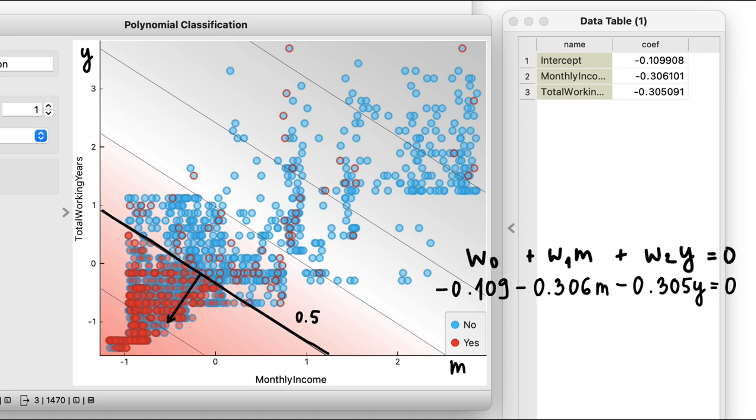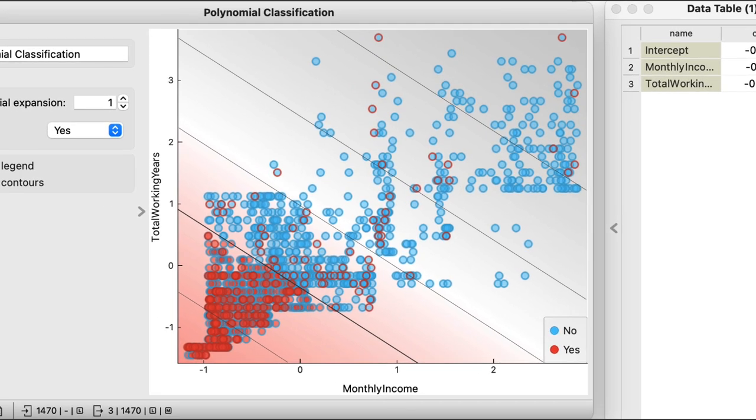Now we can also see that logistic regression transforms the distances from the decision boundary to class probability. For example, the probability of attrition of 0.6 is about here, and on the other side the probability goes below 0.5, with around 0.4 here and 0.3 around here.